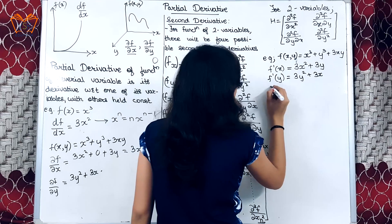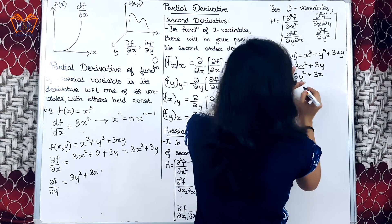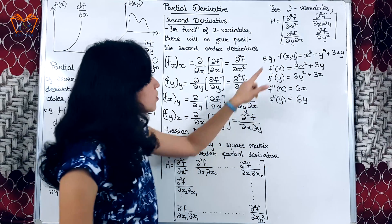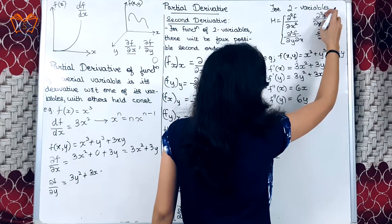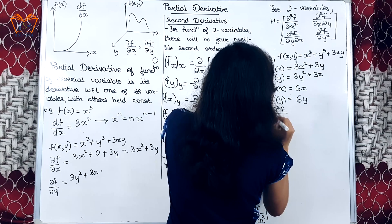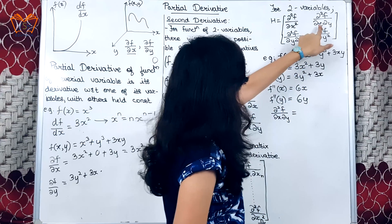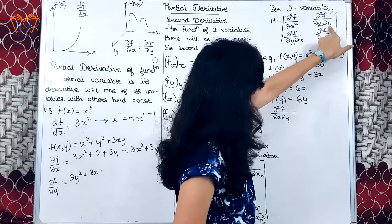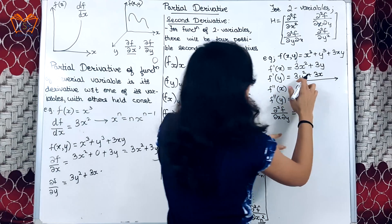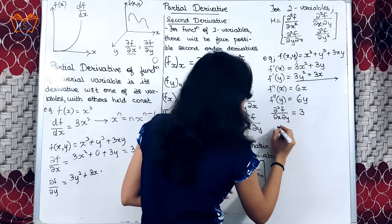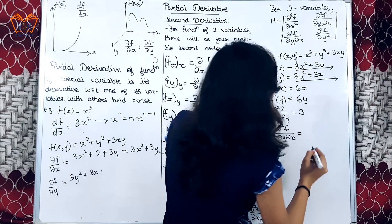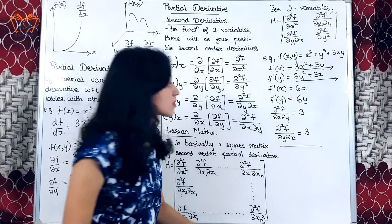Now we want the double derivatives. The double derivative f''ₓₓ is 6x, and f''ᵧᵧ is 6y. For the mixed derivative ∂²f/∂x∂y, we take the partial derivative of f'ᵧ = 3y² + 3x with respect to x. The term 3y² goes to zero and 3x gives 3. Similarly, ∂²f/∂y∂x is found by taking the partial derivative of f'ₓ with respect to y, which also equals 3. So these are the four elements of the Hessian matrix.